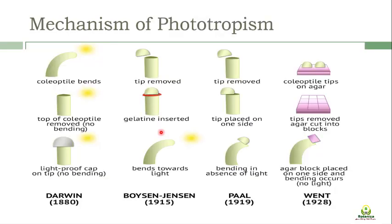Many experiments were carried out to understand where the response starts and what happens in the phototropic response. Most of these experiments are attributed to F.W. Went, who carried out the last experiment in 1928. However, the experiments on the oat coleoptile were first carried out by different scientists, beginning with Charles Darwin in the 1880s.